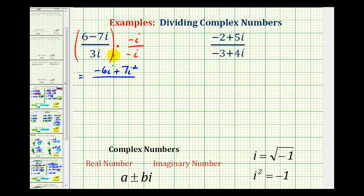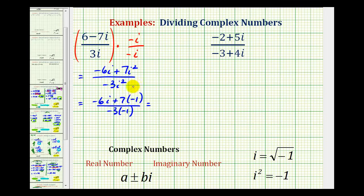And notice the denominator is going to be negative three i squared. Now we're going to substitute negative one for i squared, both in the denominator and the numerator. So we're going to have negative six i plus seven times negative one, all over negative three times negative one. And now let's simplify, putting the real part first and the imaginary part second in the numerator. So we'd have negative seven minus six i.